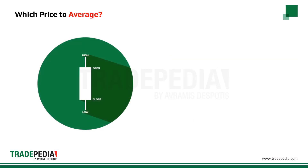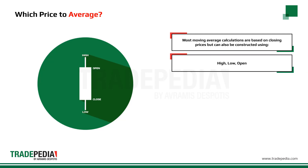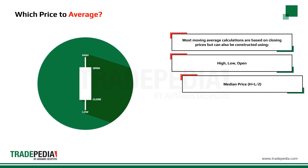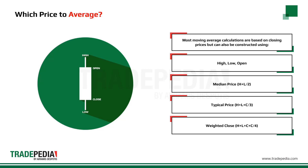Another thing to consider is which price to average. Since the closing price is considered to be the most important price by the majority of market participants, most moving average calculations are based on closing prices, but can also be constructed using the high of the period, the low, the open, or even the median price which is high plus low over two, the typical price which is high plus low plus close over three, or the weighted close price.